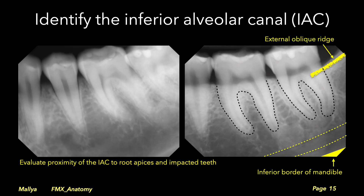Next, identify the anatomic structures in the region. These include the external oblique ridge, the inferior alveolar canal, and the inferior border of the mandible. Outline the cortical borders of the inferior alveolar canal, and remember that the cortical borders of the canal may not always be well-defined.